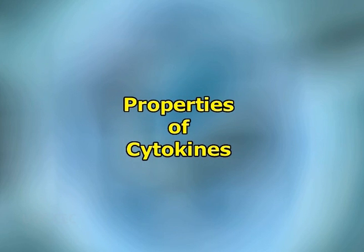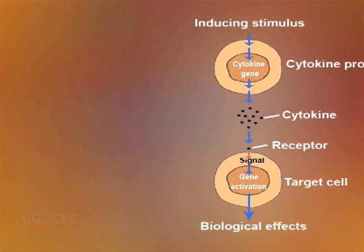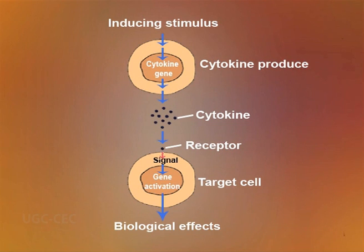Regarding the properties of cytokines: cytokines bind to specific receptors on the membrane of target cells, triggering signal transduction pathways that ultimately alter gene expression in the target cells. The susceptibility of a target cell to a particular cytokine is determined by the presence of specific membrane receptors. In general, cytokines and their receptors exhibit very high affinity for each other, with dissociation constants ranging from 10⁻¹⁰ to 10⁻¹² molar. Because their affinities are so high, cytokines can mediate biological effects at picomolar concentrations.